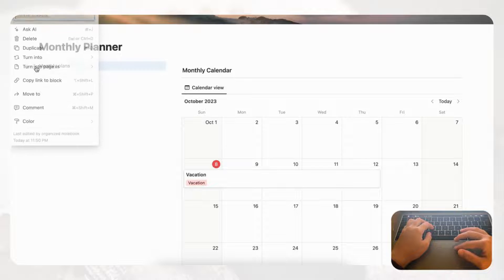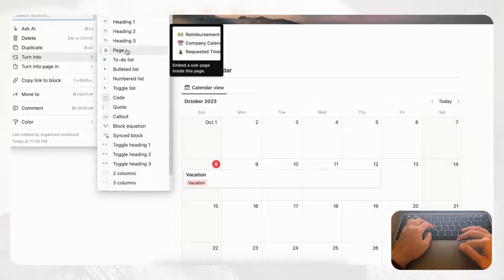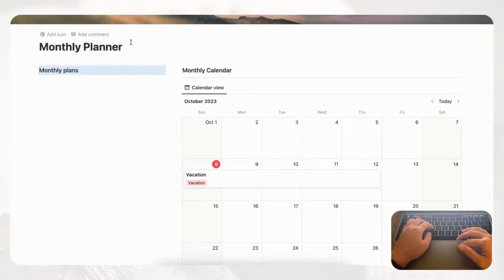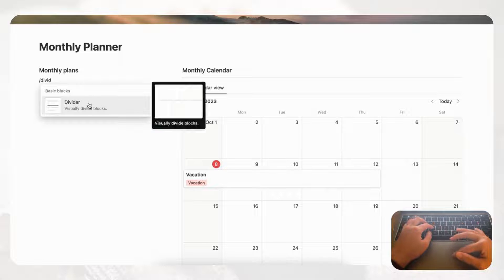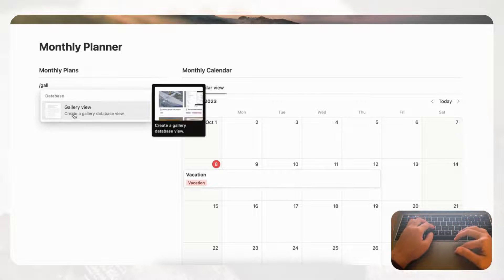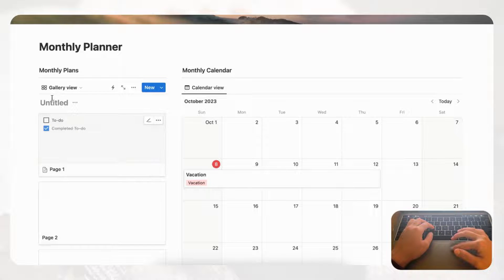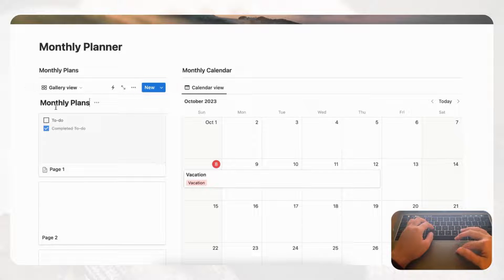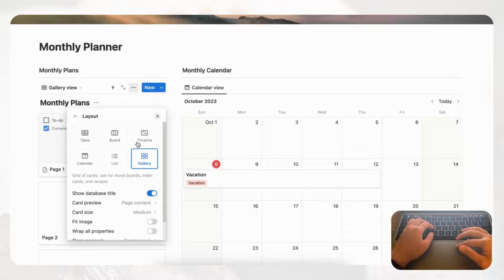Now let's go to the monthly plans section on the left-hand side. Change the label into a heading three by clicking the six dots, selecting 'Turn into,' and choosing heading three. Then type slash divider to add a divider underneath. Next, add a gallery view database by typing slash gallery view and selecting 'new database.' Name it 'Monthly Plans,' and also hide the database title by going to three dots, Layout, and toggling off 'Show database title.'